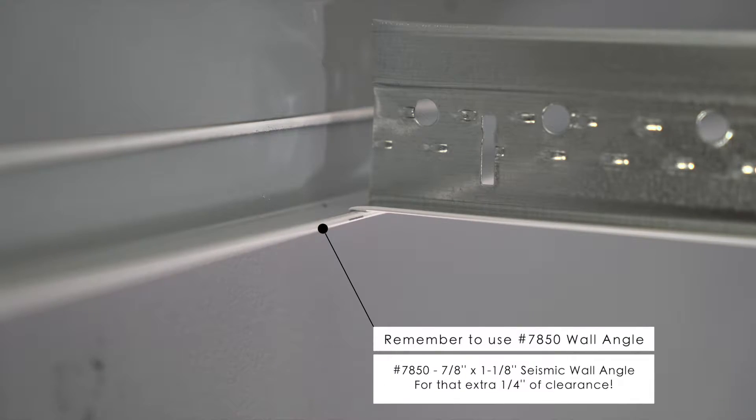Now remember, if you switch over to our new 7850 angle, your tee can extend a quarter inch beyond the hem for a little more breathing room while still leaving 3-quarter inch float clearance.